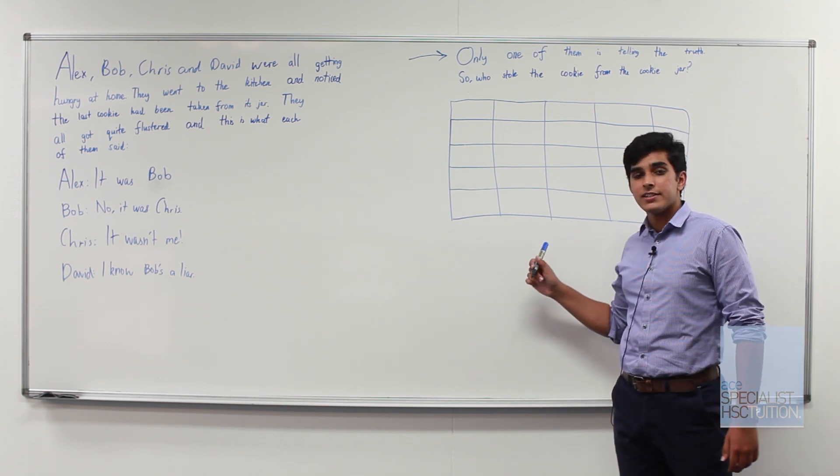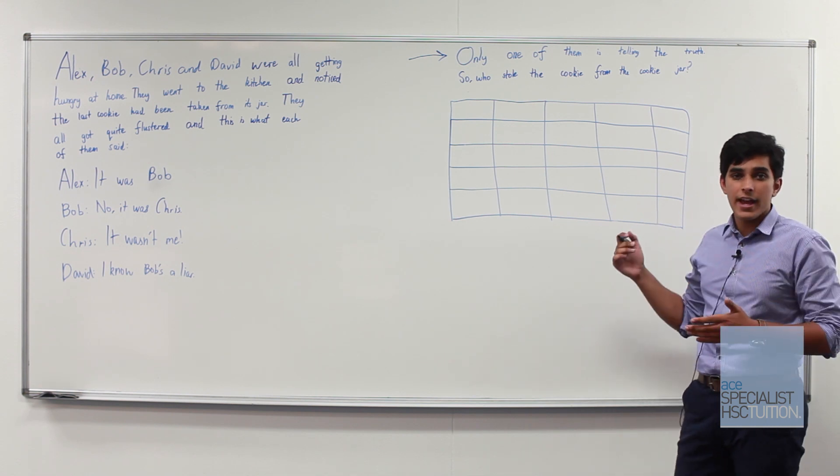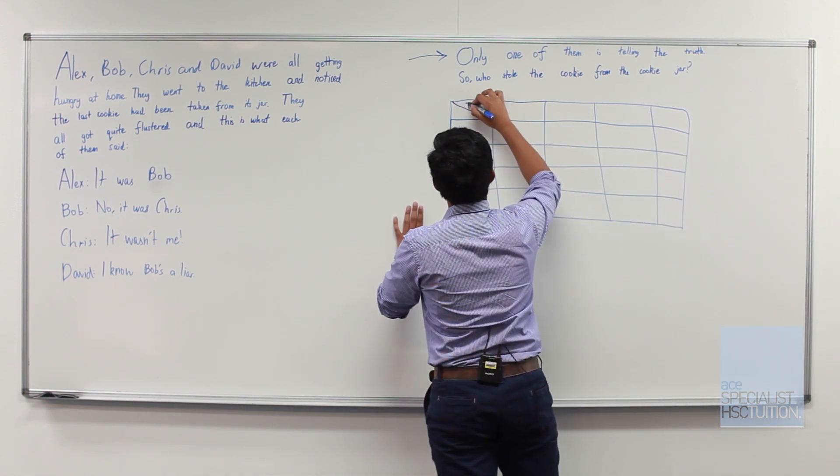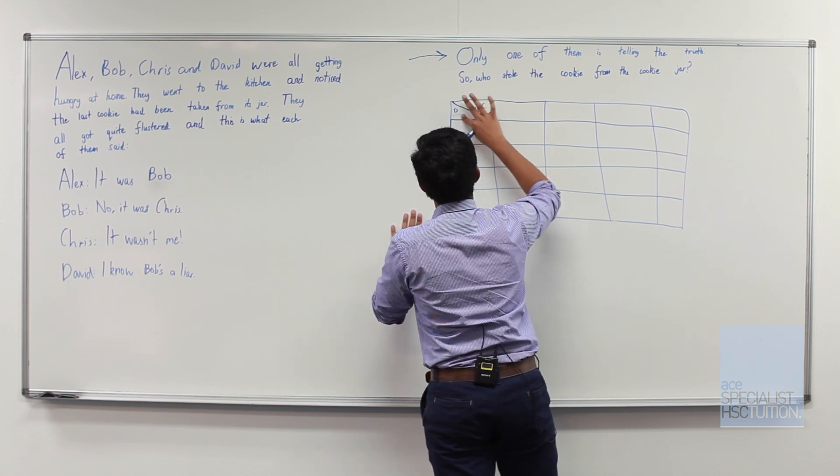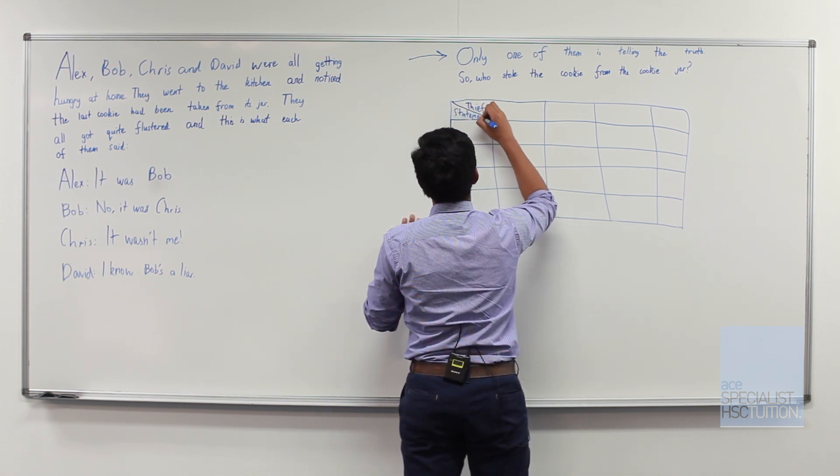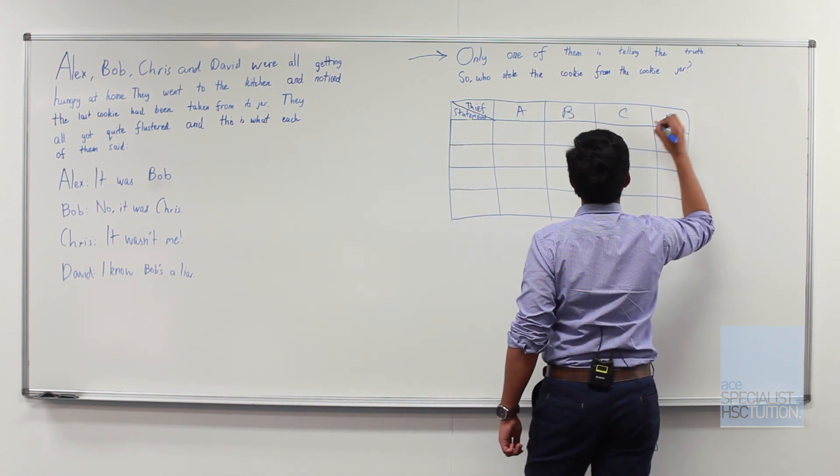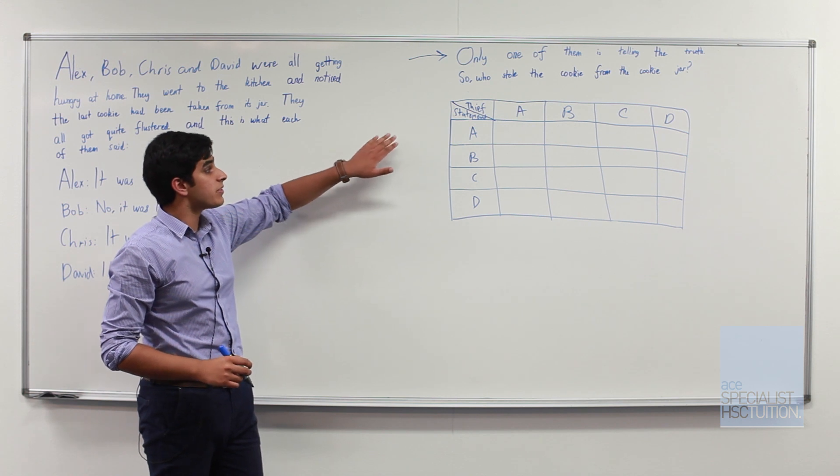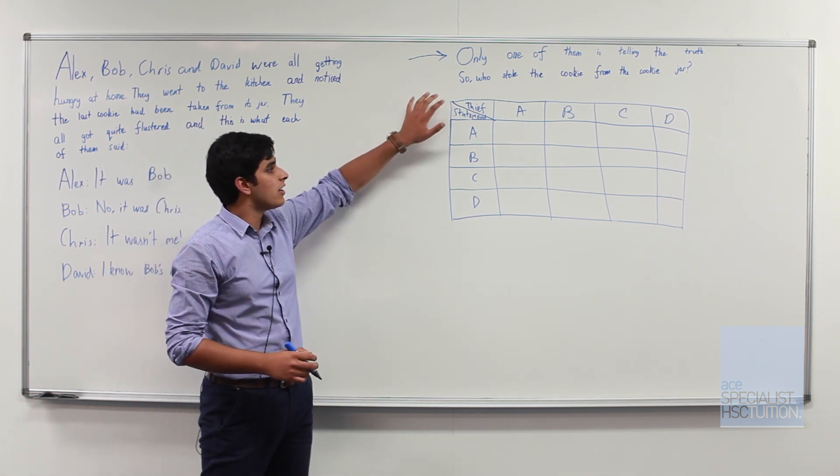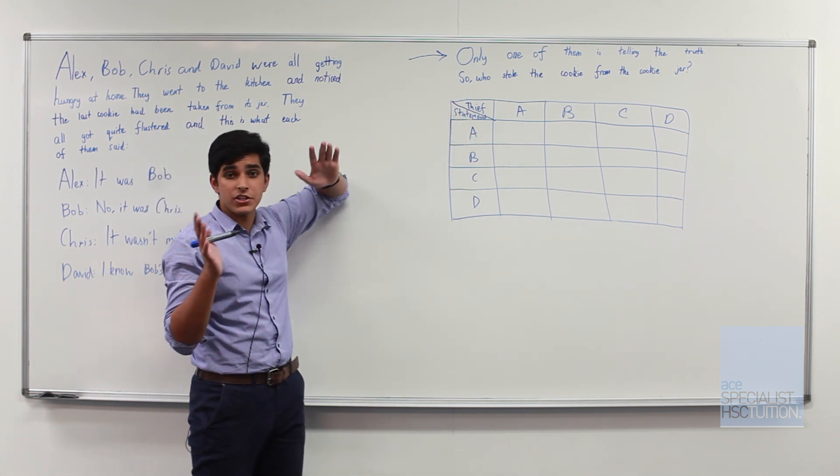So we'll design a table like the one we have here right now. As you can see we've designed it such that we compare a thief or in a particular world where A for example is the thief with how the statements are.